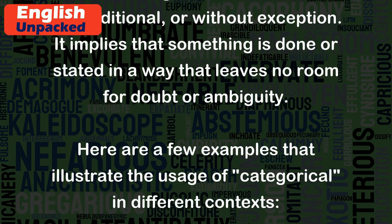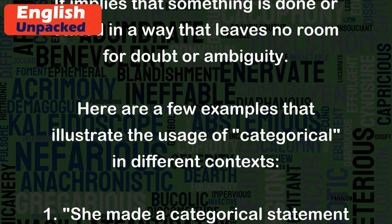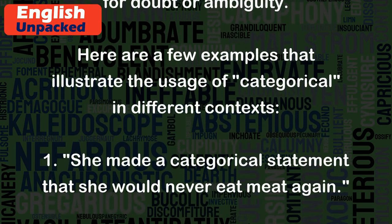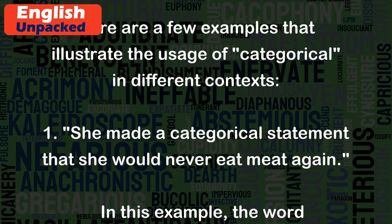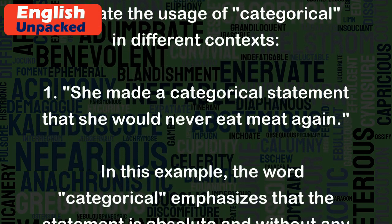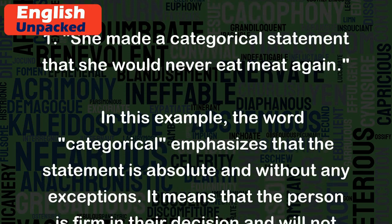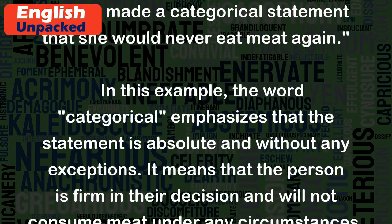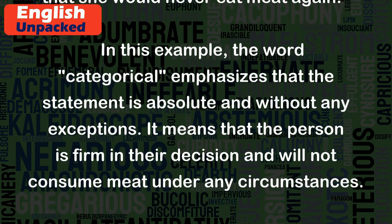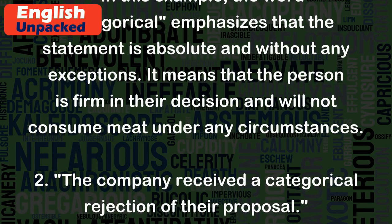Here are a few examples that illustrate the usage of categorical in different contexts. 1. She made a categorical statement that she would never eat meat again. In this example, the word categorical emphasizes that the statement is absolute and without any exceptions. It means that the person is firm in their decision and will not consume meat under any circumstances.